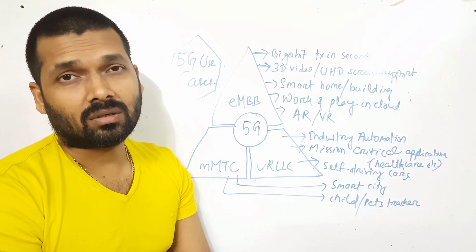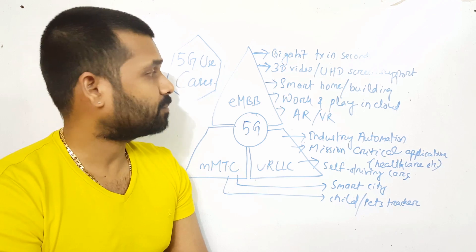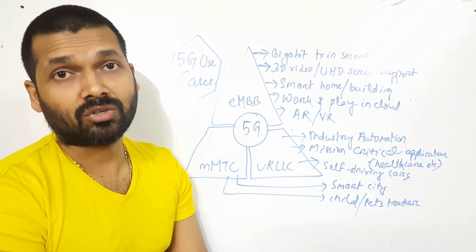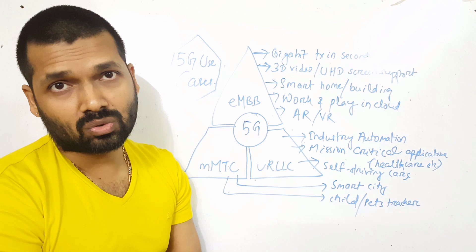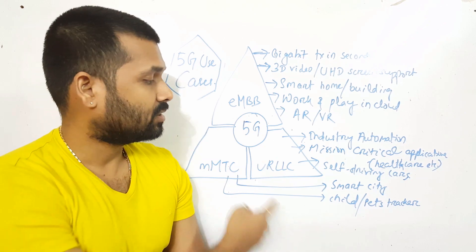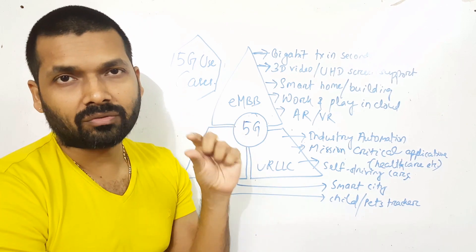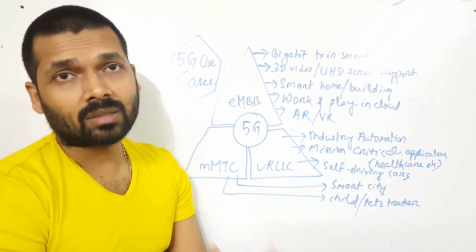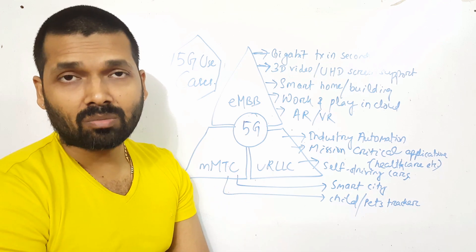Next one is URLLC, or Ultra Reliable Low Latency Communication. As the name suggests, it is ultra reliable, very reliable, and low latency. It supports the lowest latency among all three different use cases of 5G. We can expect accurate or reliable communication along with very low latency. This will be applicable for mission critical tasks.